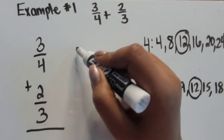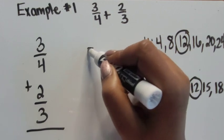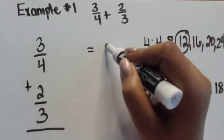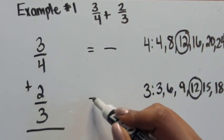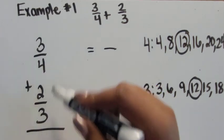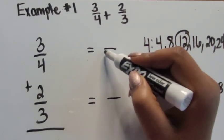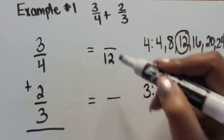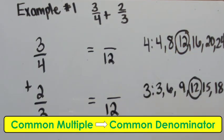We're going to show that our new equivalent fractions for both of these will have the same denominator. We're going to use 12 — that common multiple — as their common denominator.